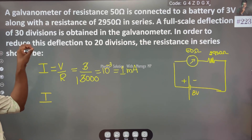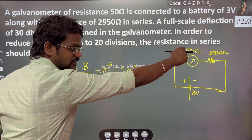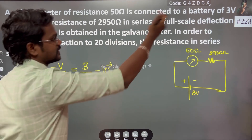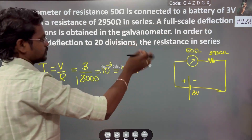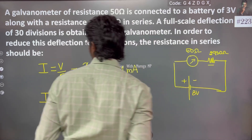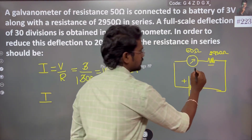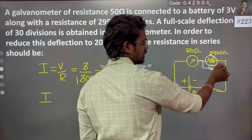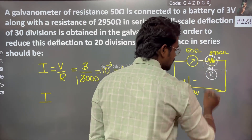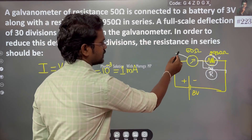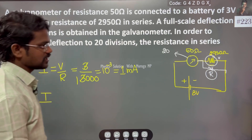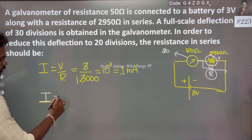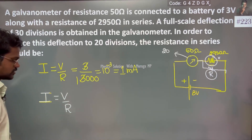In order to reduce the deflections to 20 — from 30 deflections to 20 deflections — the resistance in series should be different. So instead of 2950 ohm, we will have a different resistance R. With 30 or 20 divisions, what would be my current I2? Current is I2 equal to V by R. It is very simple.